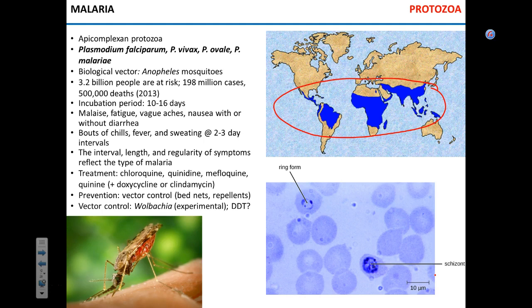People with Plasmodium falciparum will have chills every third day; people with Plasmodium ovale it will probably be every two weeks. This actually helps to diagnose malaria. We have no vaccine against malaria.